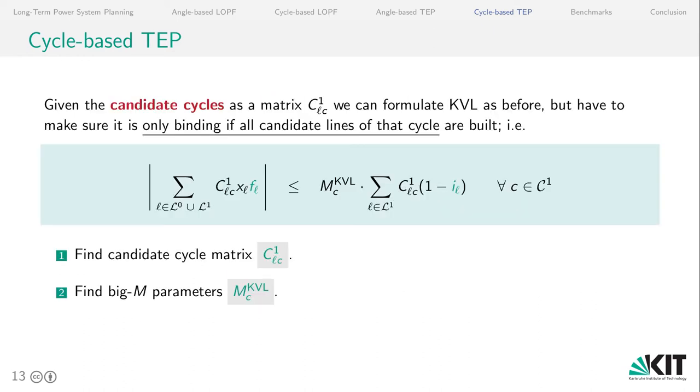So given the candidate cycles as a matrix C_LC1, which is very similar to the cycle incidence matrix we have seen before, we can formulate Kirchhoff's voltage law but have to make sure that the specific constraint for that candidate cycle is only binding if all the candidate lines of that cycle are built. And we can do this by this expression here where we pick one big M value for each cycle variable but multiply it with a sum of investment variables.